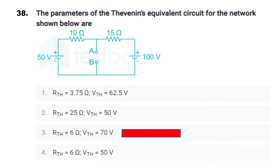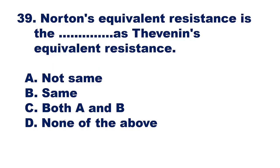Question 39: Norton's equivalent resistance is the dash as Thevenin's equivalent resistance. It is the same. Option B, same, is the right answer. Norton's equivalent resistance is the same as Thevenin's equivalent resistance.